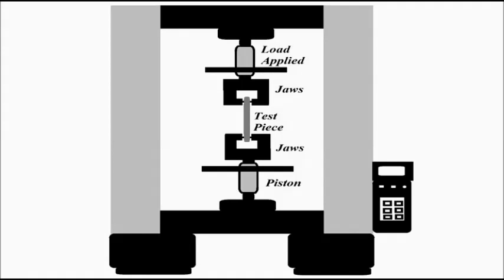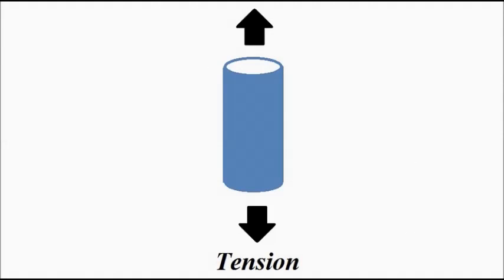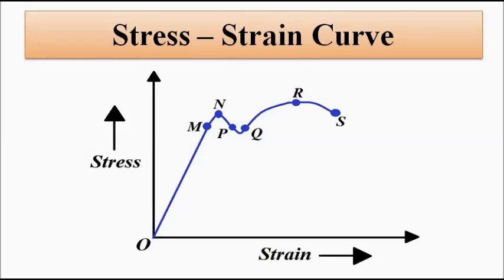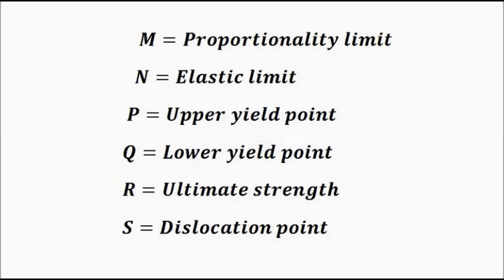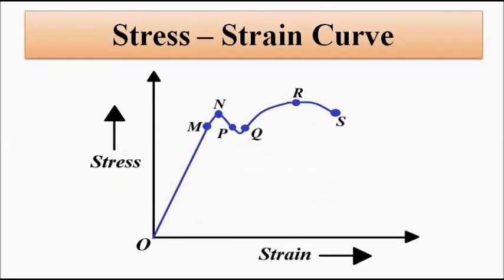From the tensile test we get a stress-strain curve with various points: the linear elastic region, the transition point between elastic and plastic regions, the yield points, the rupture point, the fracture point, and the ultimate strength — labeled as points M, N, P, Q, R, S. It is not necessary that all materials will reach all of these points.